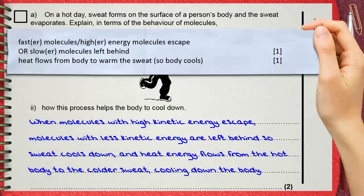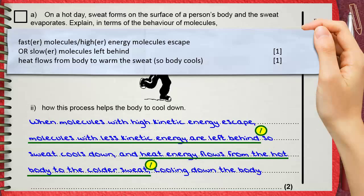Two marks are given for faster molecules, or higher energy molecules escape, or slower molecules are left behind. This is for one mark. The second mark is for heat flows from body to warm the sweat, so body cools. This is the second mark, and this is exactly what we said here in our answer.